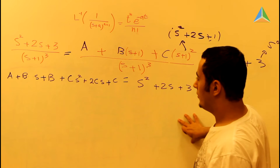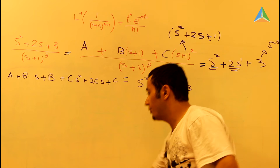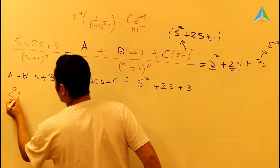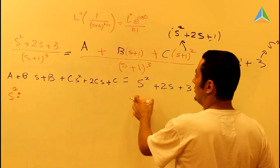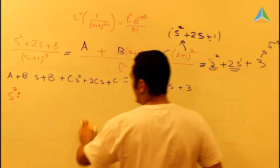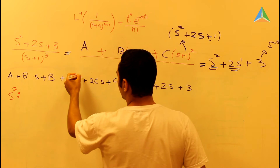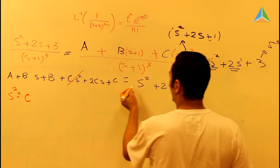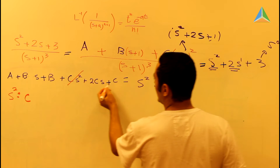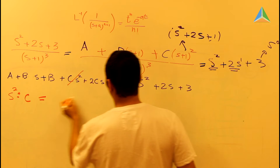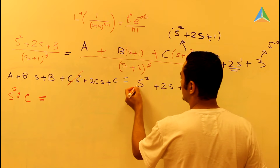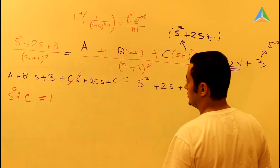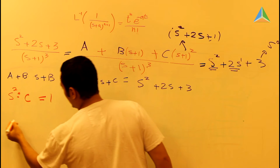Right now we are going to determine our three equations. The first equation is for s². Why s²? Because the biggest power is s². We look for s² and we see it comes from C, so the first equation is C equal to 1.